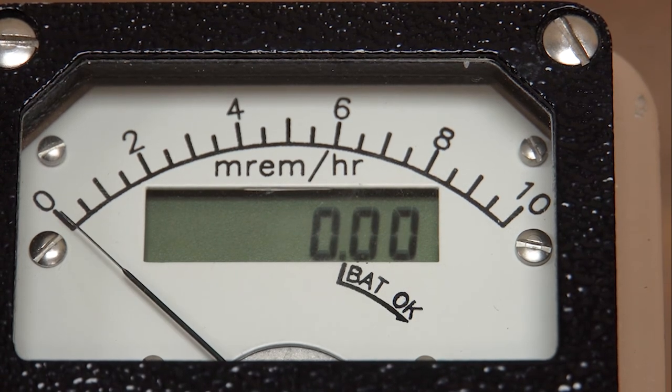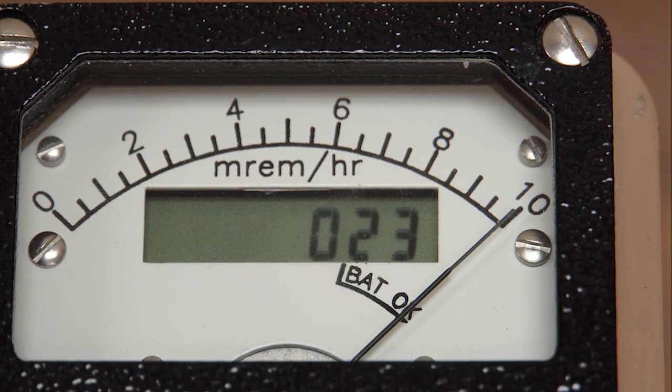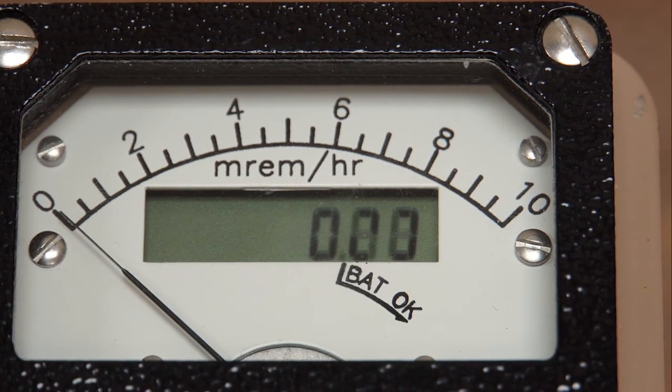When the instrument is first turned on, the meter will be driven full scale for about two seconds and then it will return to zero. The LCD will show a series of eights and colons, then will display the current sample number and then zero.